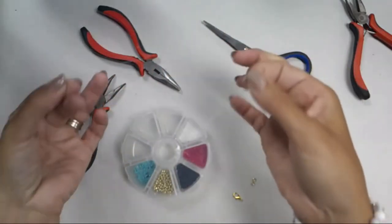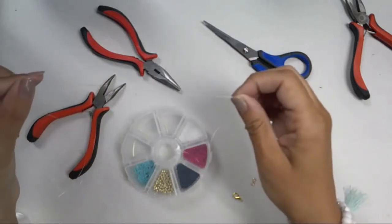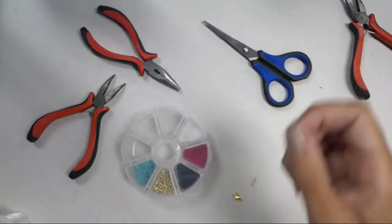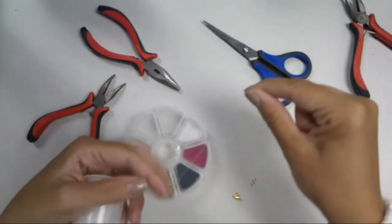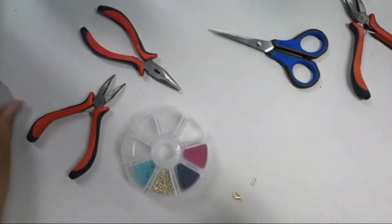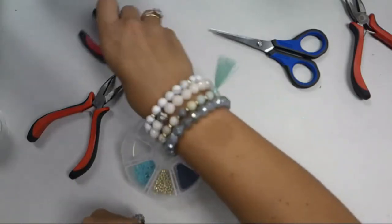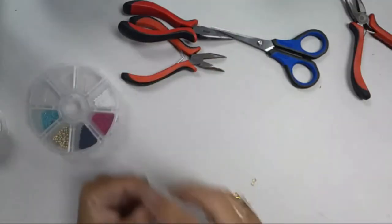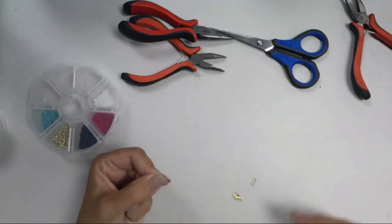Once you get it four times, allow for some extra because you're going to crimp each end to attach your clasp. But if you want to just start with five feet, you can do that. And I'm going to cut that. To start here, you're going to crimp the end of this.